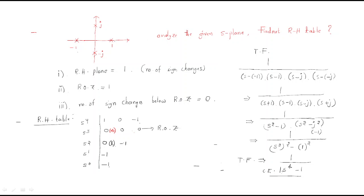So the sign change count is one. In the RH plane there is one sign change, ROZ is only one, and the number of sign changes below ROZ is one. This confirms one right-hand pole.